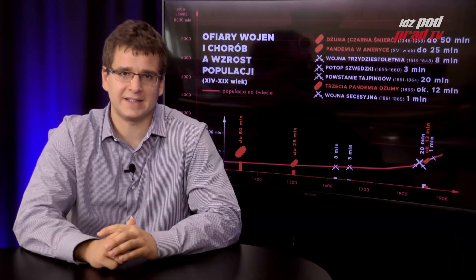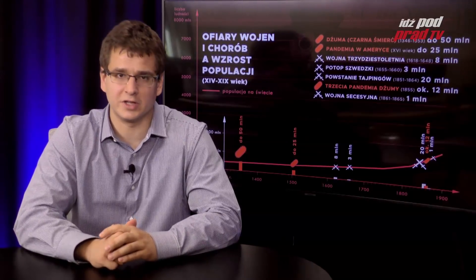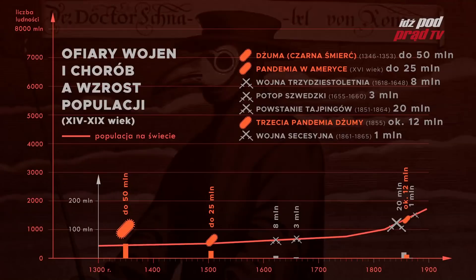Argumentem, na który powołują się ewolucjoniści, gdy są konfrontowani z takimi obliczeniami, jest to, że kiedyś było dużo chorób, wojen, czy że opieka medyczna była słaba i dlatego liczba ludności rosła bardzo powoli albo w ogóle nie rosła czy spadała. Warto skonfrontować taką hipotezę z danymi historycznymi. Historia pokazuje, że liczba ludności świata rosła w tak szybkim tempie, pomimo przeróżnych epidemii czy wojen, a w szczególności wojen światowych. Na wykresie możecie zobaczyć największe epidemie i wojny w dziejach świata wraz z liczbą ofiar nałożone na liczbę ludności.